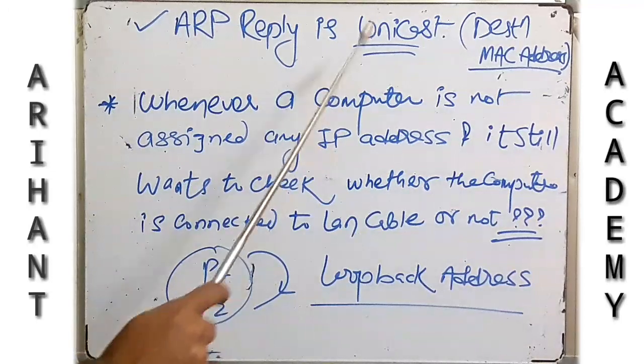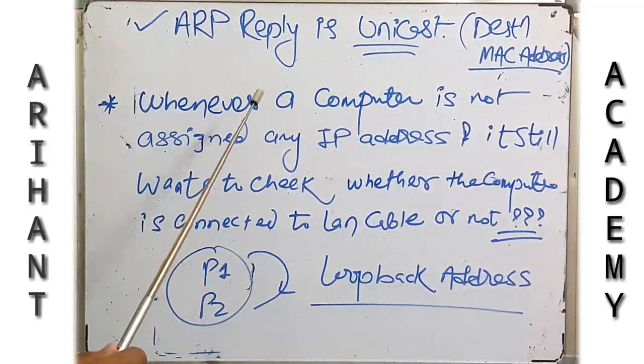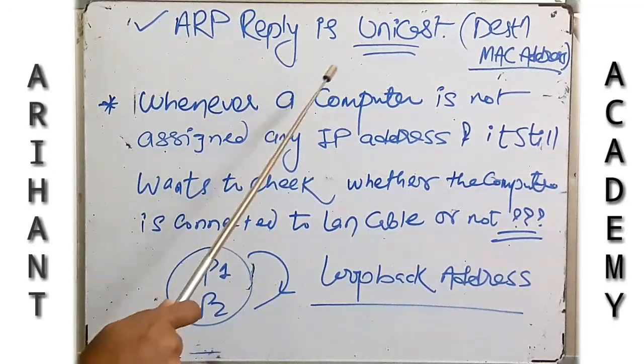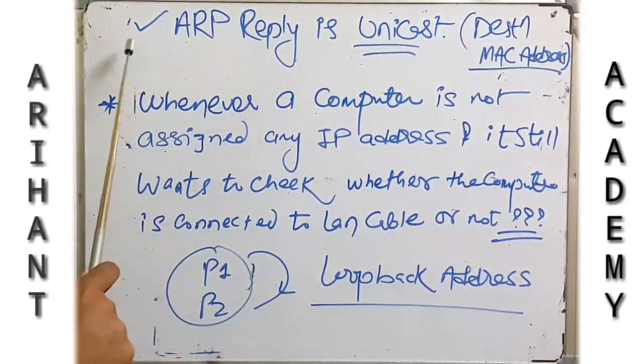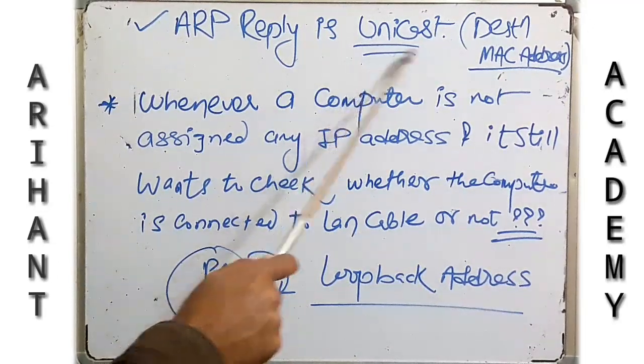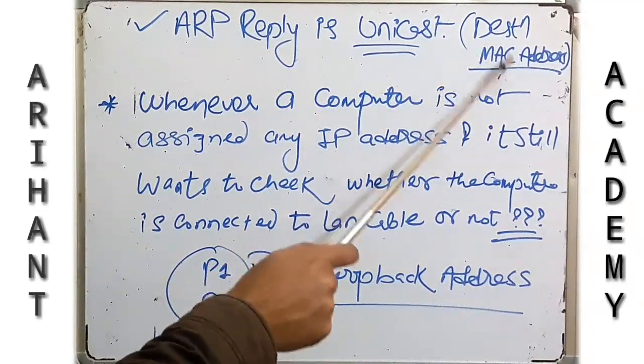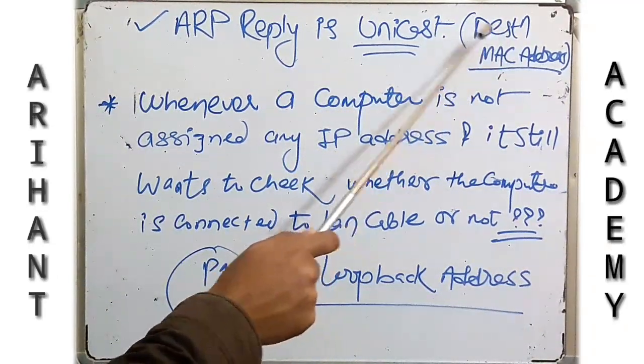The ARP reply is a unicast. The ARP reply we are seeing for getting that is unicast, meaning it only contains the destination MAC address in it.